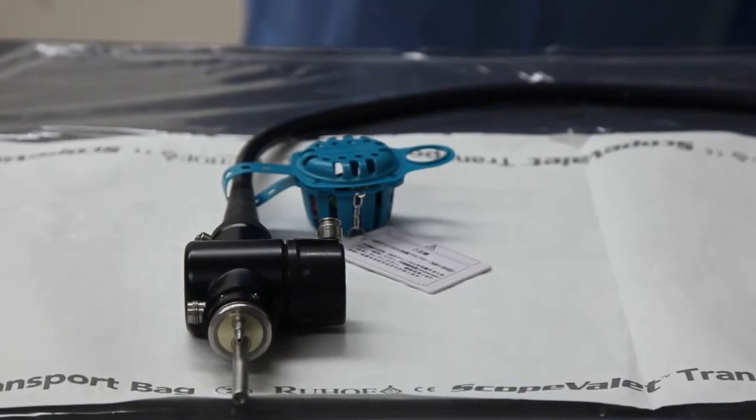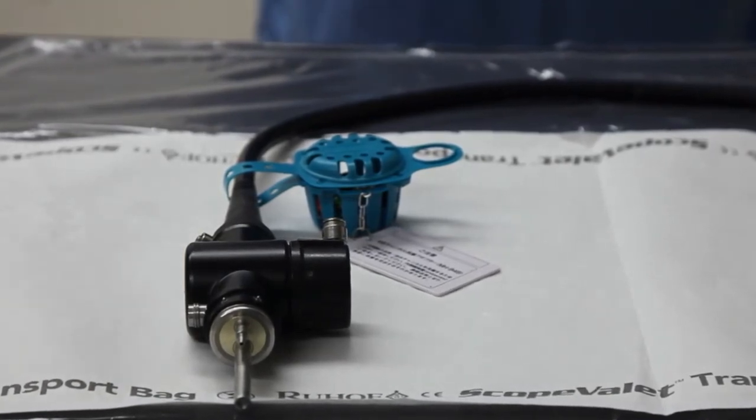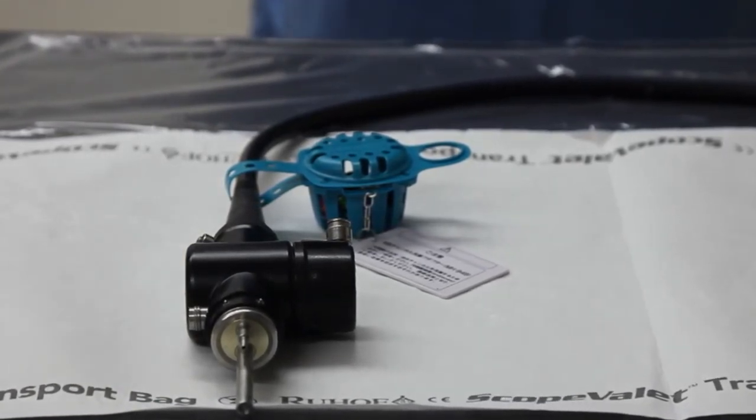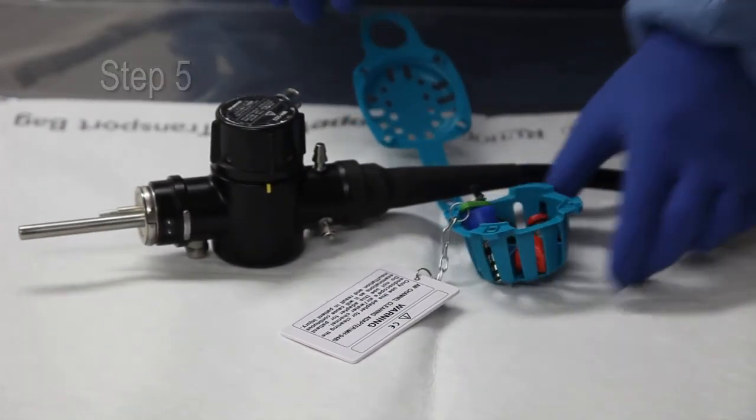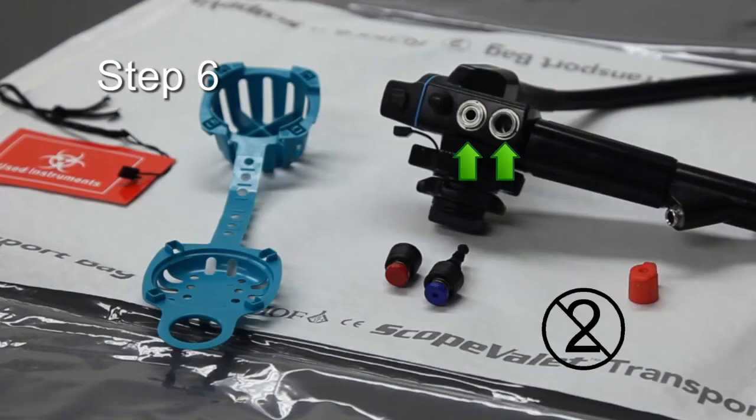Once the valves are ready to be replaced into the clean endoscope, the following steps should be taken. Pull the ring pull to open the ValveSafe so as to release the valves. Place the valves back with the endoscope. Safely discard the ValveSafe. Do not reuse.